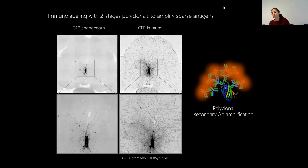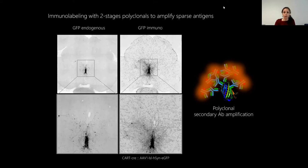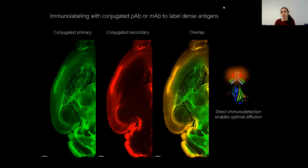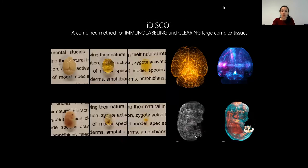The advantage of iDISCO is that it produces very scatter-free, transparent samples. However, it doesn't preserve endogenous fluorescence, so we always need to do immunostaining to detect the signal. For this we use two strategies: combining primary and secondary antibodies when the antigen is sparse or has low expression levels, or using conjugated primary antibodies when the antigen is very dense, since in those cases secondary antibodies don't diffuse well and the staining quality suffers.